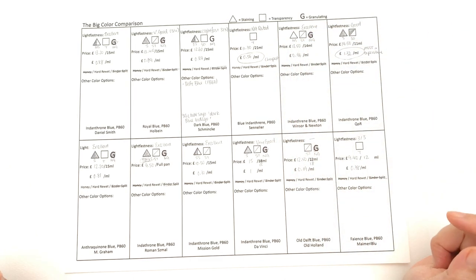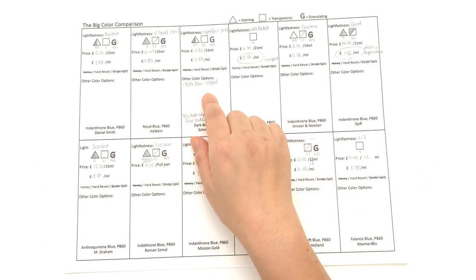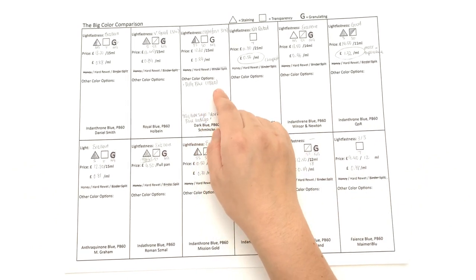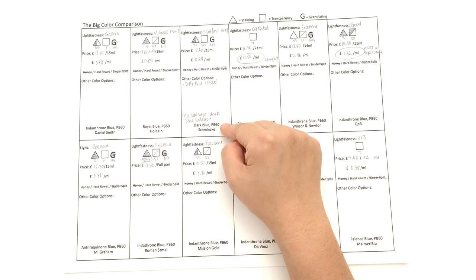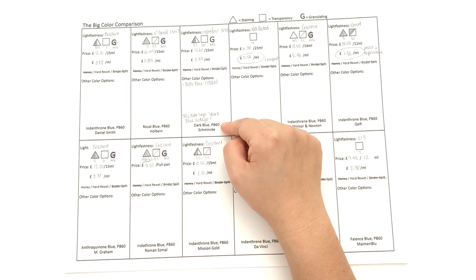In terms of other colors, we only have the Delft Blue, which is again PB60 that Schmincke has, as well as the Dark Blue or the Indigo or the Dark Blue Indigo. If you know any more than me on this one then please do let me know in the comments down below what is happening with those naming, but yeah, they do have a Delft Blue.